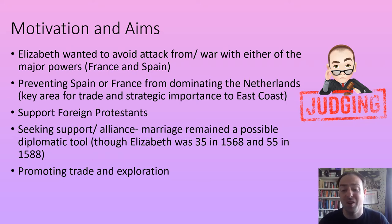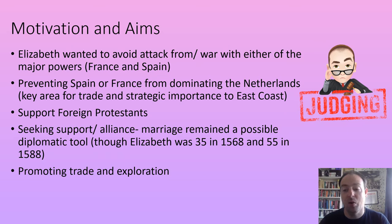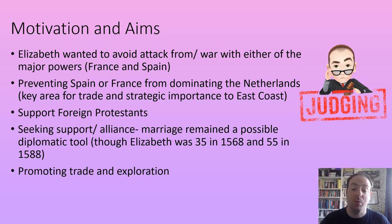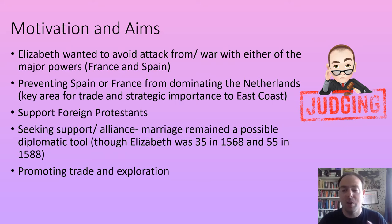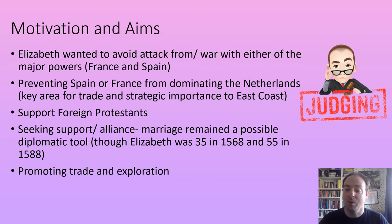Essentially Elizabeth's foreign policy is largely defensive. She wants to avoid attack or war with one of the two major powers on her doorstep — France and Spain, and Spain as part of the wider Habsburg Empire. She wants to stay on as good terms with those as she possibly can. It's difficult because they are often at loggerheads with each other, so if she moves closer to one she puts herself further from the other, and we see this in her marriage negotiations.